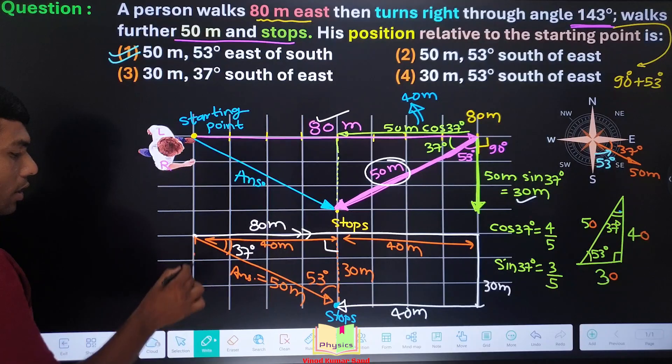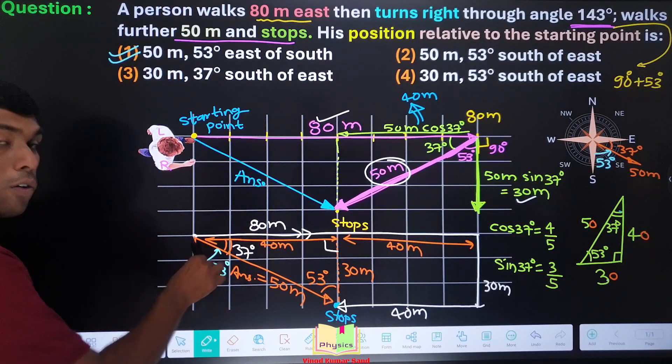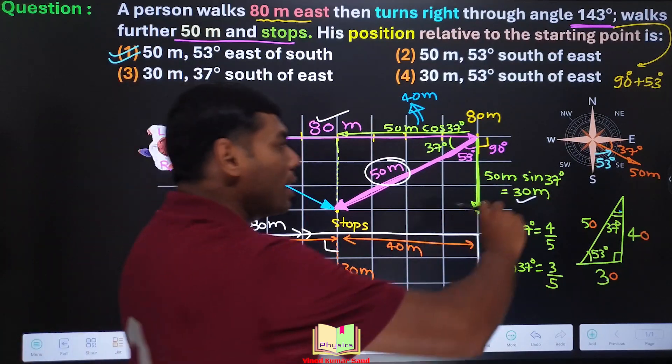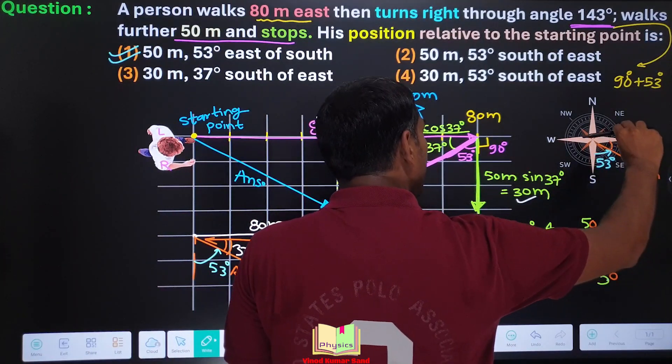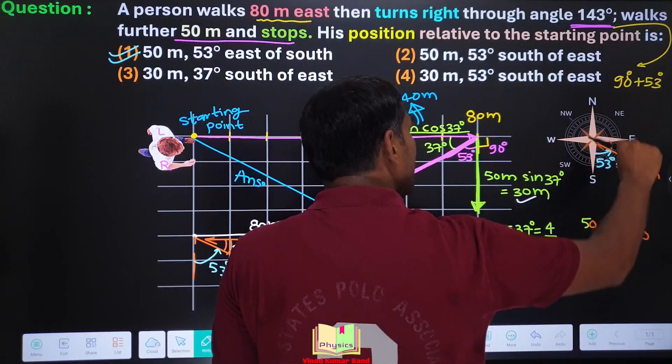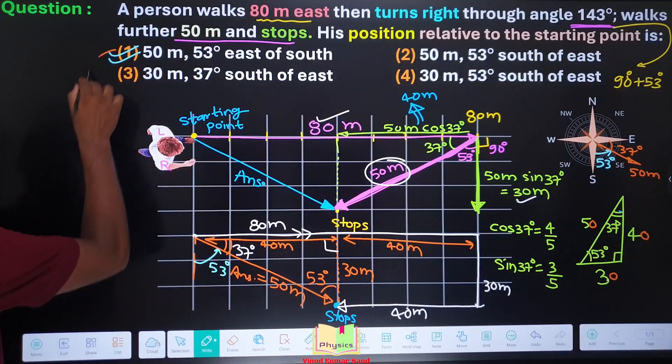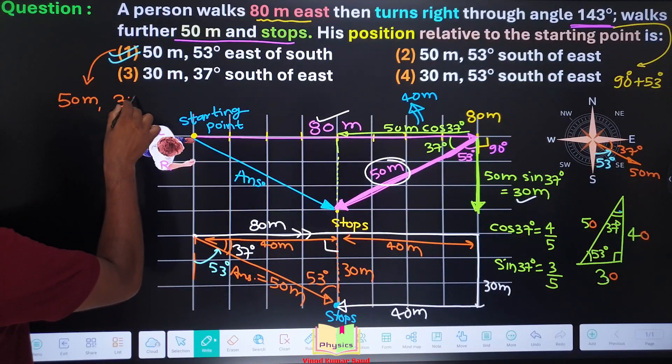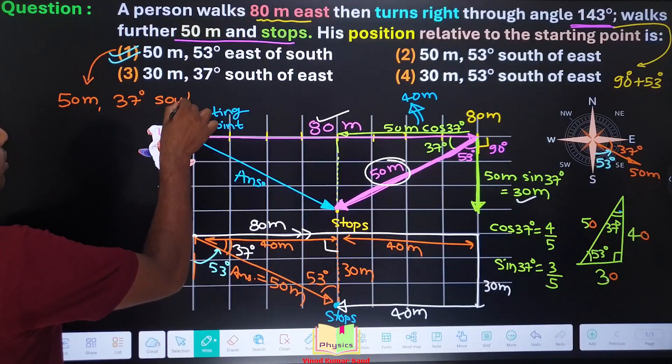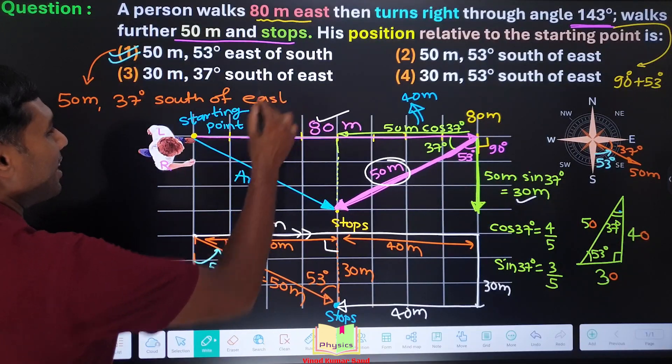See, again we can write the answer in two ways. Number 1, 53 degrees east of south, I mean to say this, 53 degrees east of south. Or we can say 50 meters and 37 degrees south of east. This answer could be written in other manner, 50 meters and 37 degrees south of east. Both are equally correct.